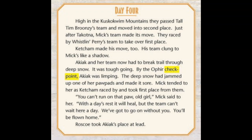Day 4. High in the Kuskakwim Mountains, they passed Tall Tim Brunzi's team and moved into second place. Just after Tokatna, Mick's team made its move. They raced by Whistlin' Perry's team to take over first place. Ketchum made his move too. His team clung to Mick's like a shadow. Akiak and her team now had to break trail through deep snow. It was tough going. By the Ophir checkpoint — and a checkpoint is a place where you check in to make sure you're on the right track — Akiak was limping. The deep snow had jammed up one of her paw pads and made it sore. Mick tended to her as Ketchum raced by and took first place from them. You can't run on that paw, old girl, Mick said to her. With a day's rest, it will heal. But the team can't wait here a day. We've got to go on without you. You'll be flown home. Roscoe took Akiak's place at lead.